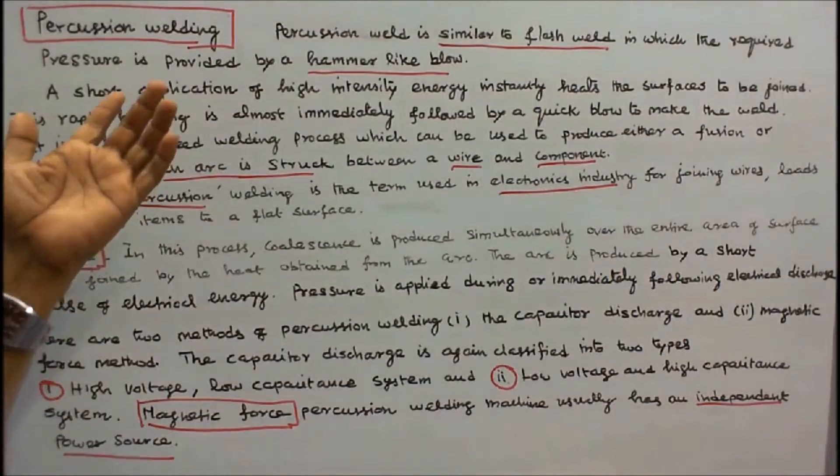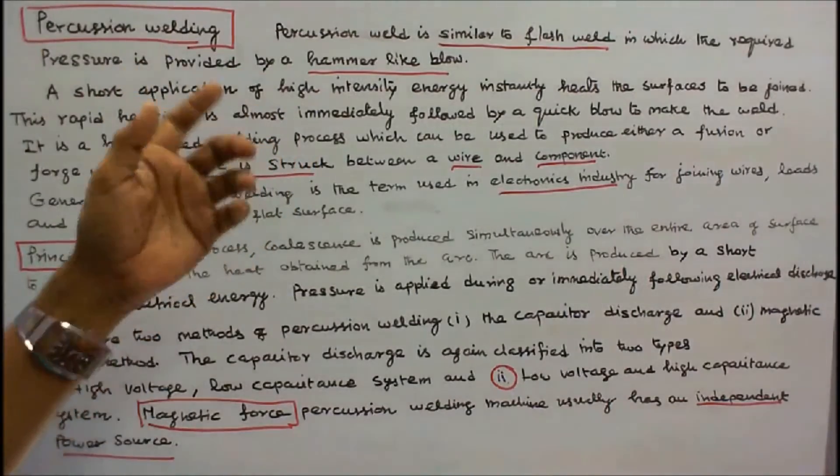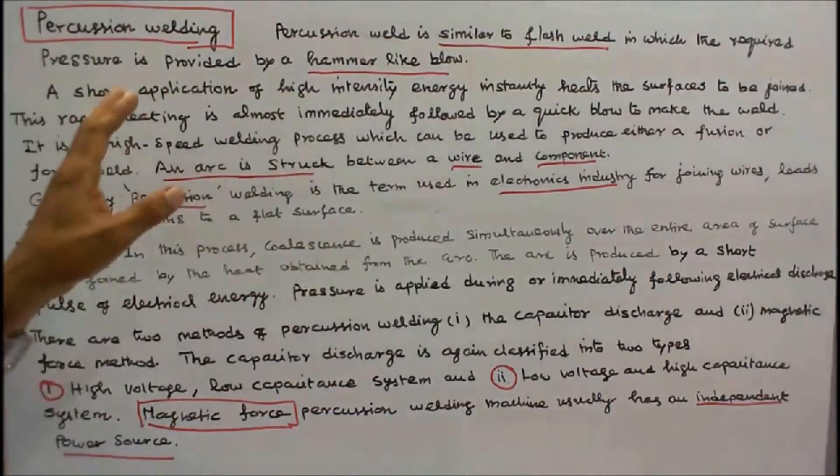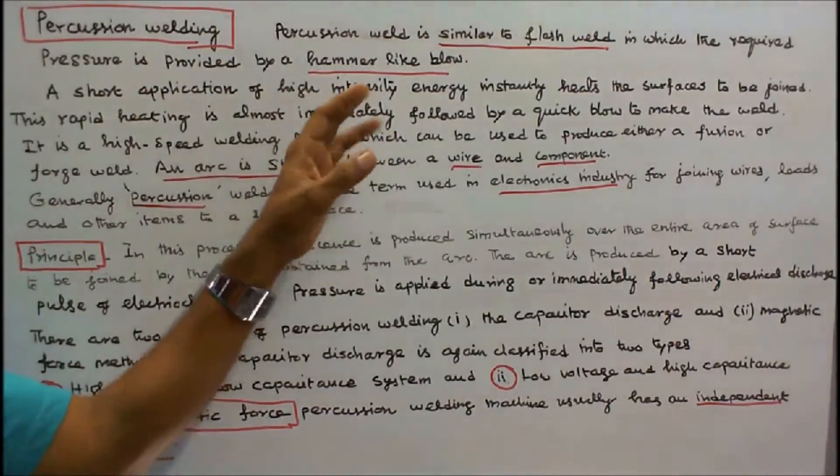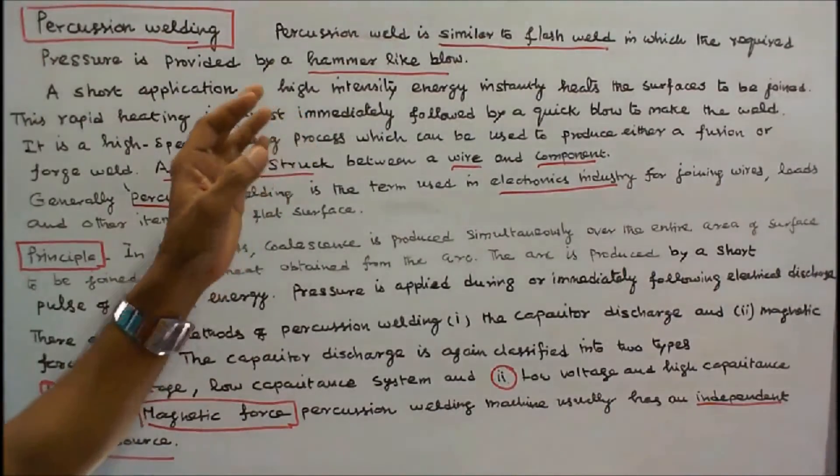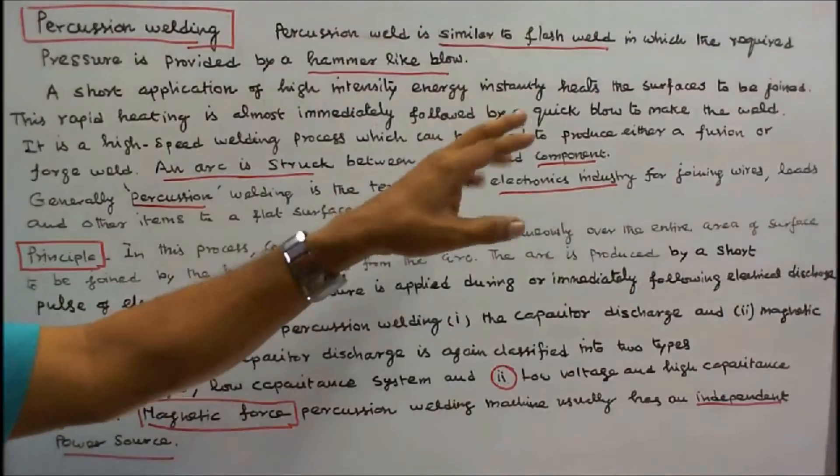In this class we discuss Percussion Welding. Percussion weld is similar to flash weld, in which the required pressure is provided by a hammer-like blow. A short application of high-intensity energy instantly heats the surface to be joined.